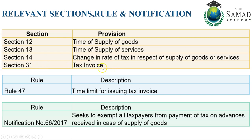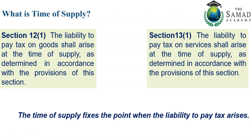Rule 47 talks about the limit for issuing a tax invoice — the time limit within which you must raise an invoice, whether related to goods or services. We will understand all these things in detail.